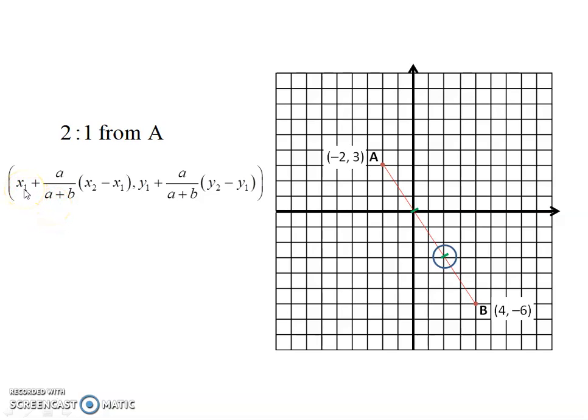starts at x1, that's the x-coordinate of your first point. It goes this fraction of the way, I'll explain that in a second, and then you take x2 minus x1, that's the x-coordinate of the second point minus the x-coordinate of the first point, and the same thing with the y's. It's broken up into an x-component and a y-component. That's because your answer is going to be a point. It's going to have an x-coordinate and a y-coordinate.